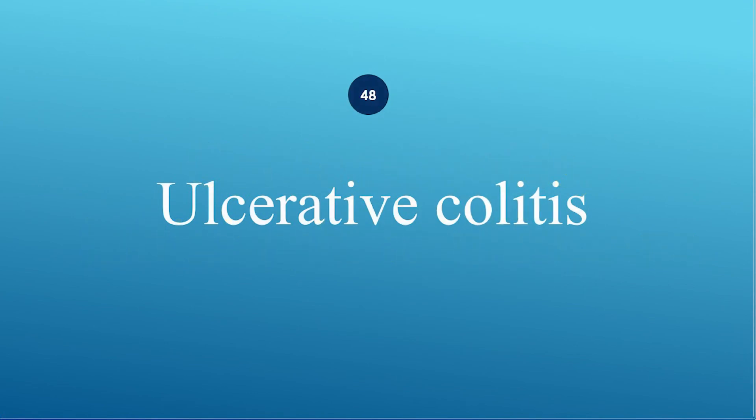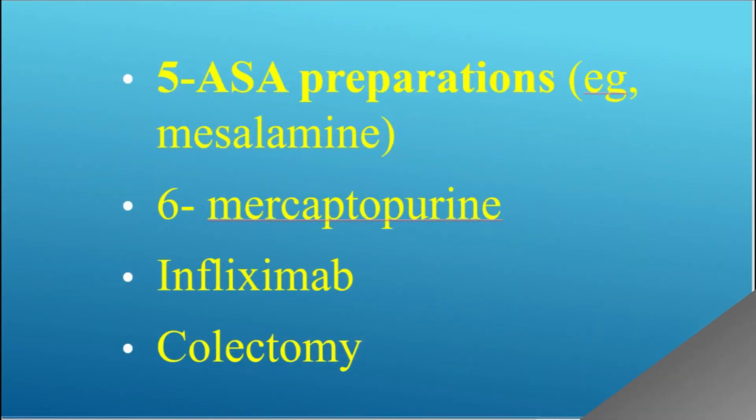How to treat ulcerative colitis? Use 5-aminosalicylic acid preparations such as mesalamine, 6-mercaptopurine, infliximab, and/or colectomy.